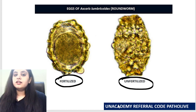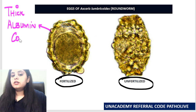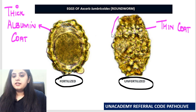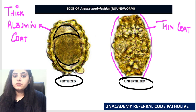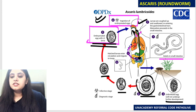Now let's look at the eggs. The fertilized egg has a thick albumin coat, whereas the unfertilized egg has a very thin coat. The fertilized egg is more round to oval, while the unfertilized egg is more elongated. In the fertilized egg there are two chromatoid spaces. You can see in the life cycle diagram: the fertilized egg has two chromatoid spaces and a thick coat, versus the non-fertilized egg.